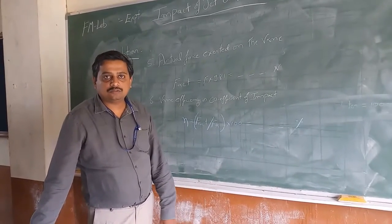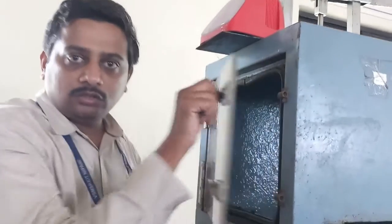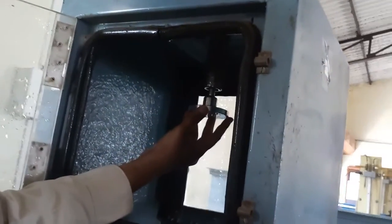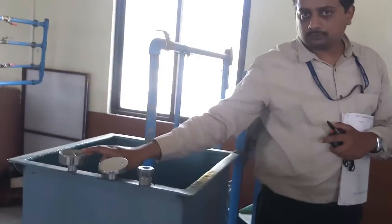Hi everyone, this is Professor Satishuli. Today we are going to conduct an experiment on impact of jet on vanes, which is part of the fluid mechanics lab for the first semester. This experiment is important to study the efficiency of vanes, because the type of vane fitted in a turbine determines its efficiency. We have three types of vanes: flat, inclined, and hemispherical.